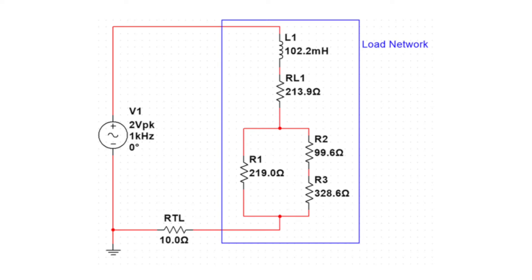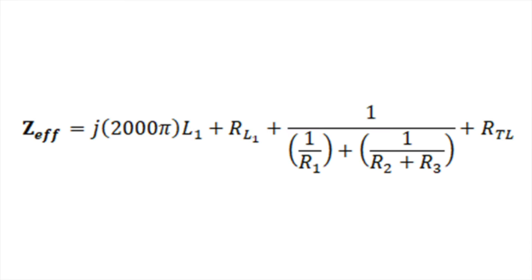Since we need the total impedance of the circuit, I found that the total impedance of this circuit in particular is equal to this big expression. When we substitute it into our power factor equation though,